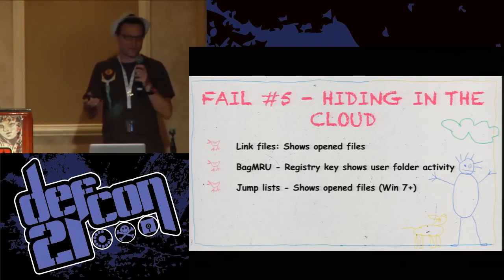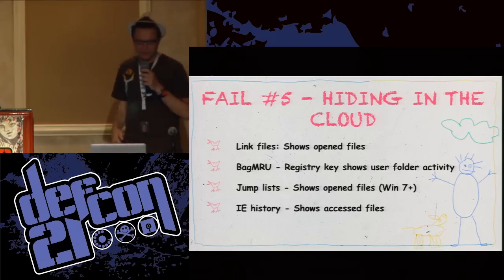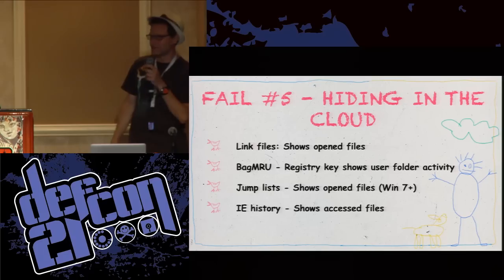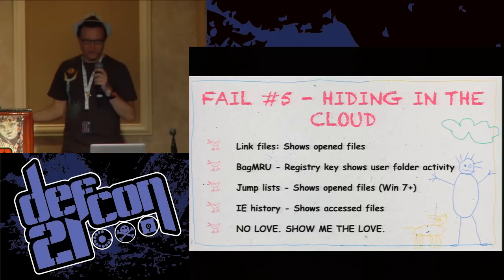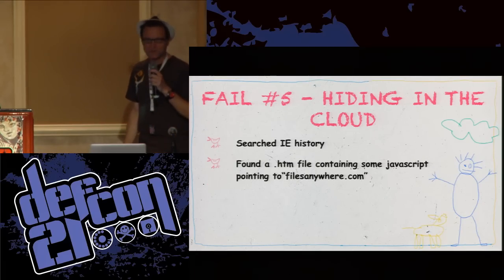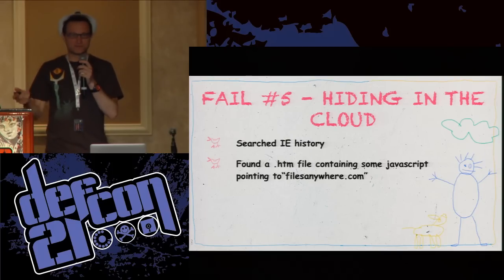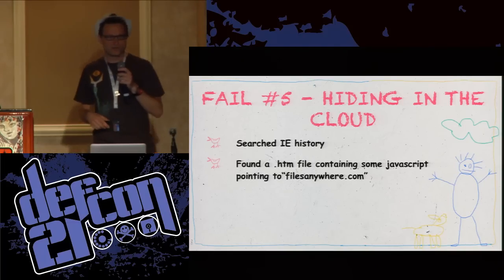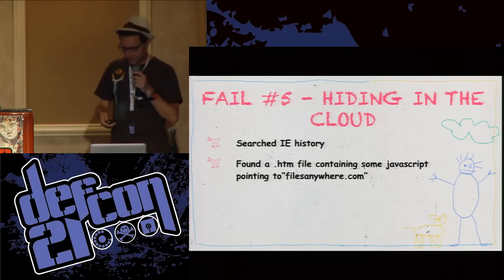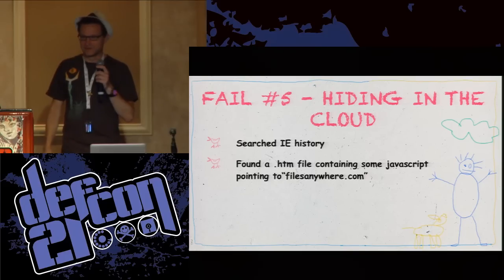Jump lists are the items on your taskbar — if you've got five Word documents open and you click, those are jump lists. IE history — Internet Explorer — is so much more than just exploring the internet. It actually records things you do without your knowledge, like opening files. We searched the IE history and found a dot HTM file that had some JavaScript in it pointing to Files Anywhere, which is very much like Dropbox but more for business users with really great auditing, logging, and tracking. We found this little .htm file and solved the case.